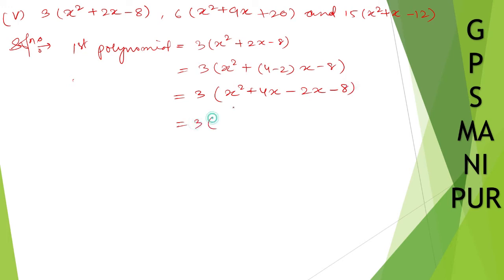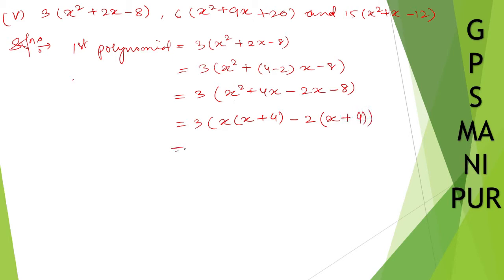Taking x common from the first two terms gives x(3x + 4), and taking -2 common from the last two terms gives -2(x + 4). So the first polynomial factors as (3x - 2)(x + 4).